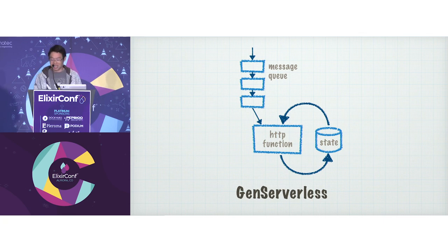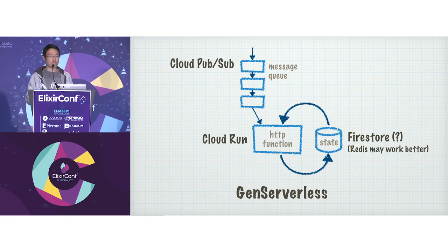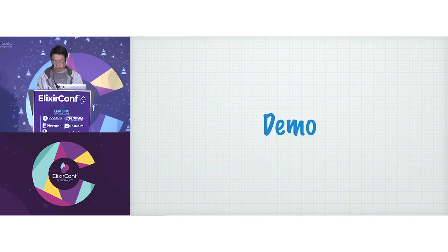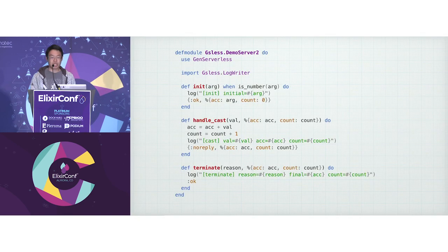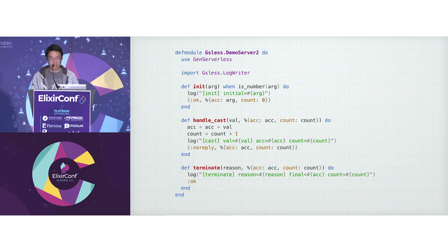Just for kicks, I tried implementing it. I spun up serverless functions in Cloud Run — a Google Cloud product — used Google Pub/Sub for the queue, and tried Google Firestore to persist state. It doesn't work as well as something like Redis for this pattern, so I have a sort of working implementation on Firestore. In this gen-serverless process, it's a simple accumulator — you cast numbers at it and it keeps a running total. I also rigged up a quick cloud logger so you can see the callbacks running in the cloud.